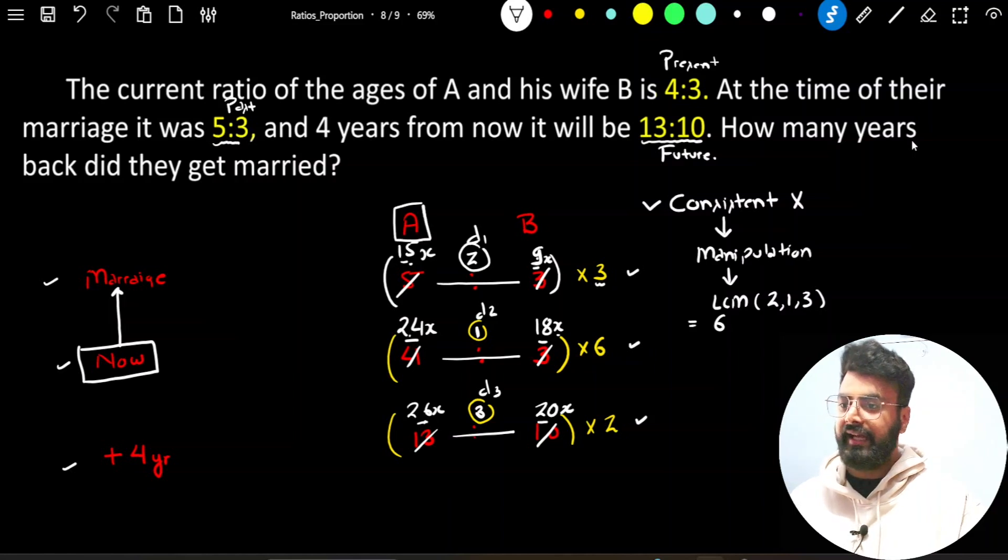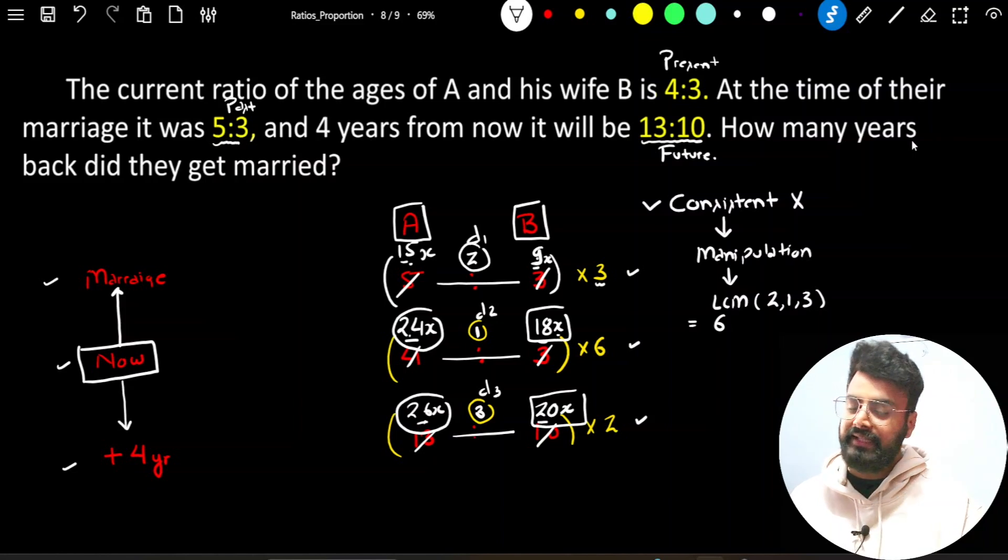If you look at it carefully, देखो, चाहे मैं A का use करके calculation करूं, या B का use करके calculation करूं, ये जो vertical differences हैं, ये तो same आएंगे ना। If I look at A's data, A की age present में कितनी है: 24x, और वो ही age 4 साल के बाद कितनी हो जाएगी: 26x. You would have checked the same thing for B as well, here also what would you have realized, यहां पे भी B की age, same value से change होगी। So जो vertical difference है दोनों ही cases में, 2x आएगा।